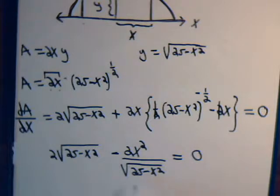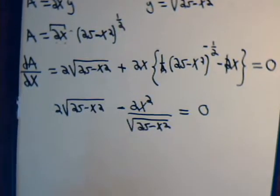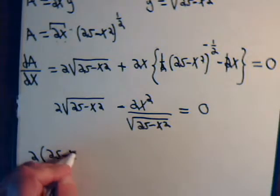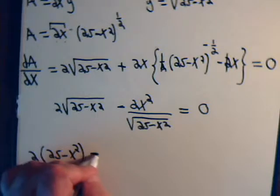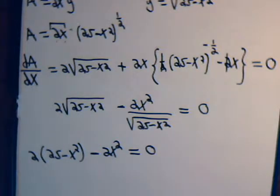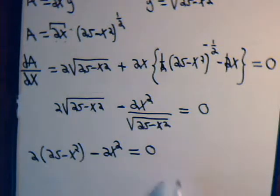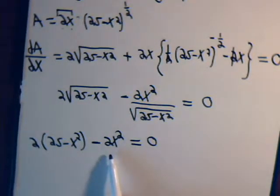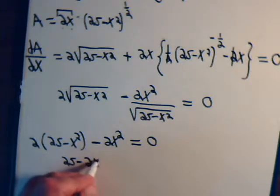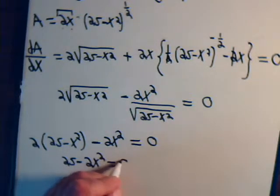That negative exponent puts the term in the denominator. We multiply both sides of the equation by that denominator, which gives us 2 times (25 minus x squared) minus 2x squared equals 0. So we're going to have 50 minus 4x squared, or that would be 25 minus 2x squared equals 0.